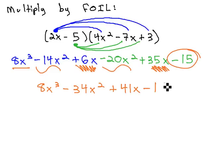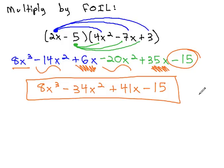Finally, the minus 15 at the end will complete our final answer, our product to be 8x cubed minus 34x squared plus 41x minus 15.